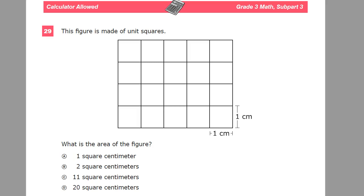The figure is made up of unit squares, which means each one of these little squares that we have is considered to be a unit. A unit is how we measure things. So in this case, it's one centimeter by one centimeter.